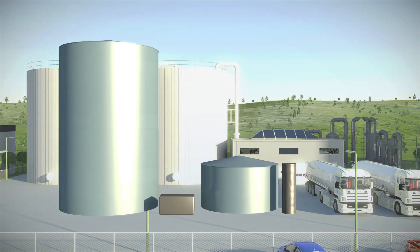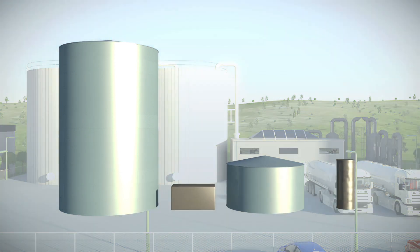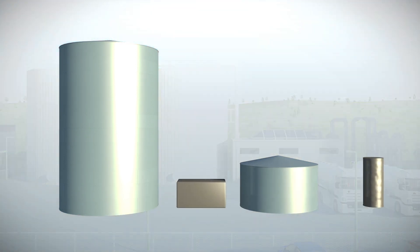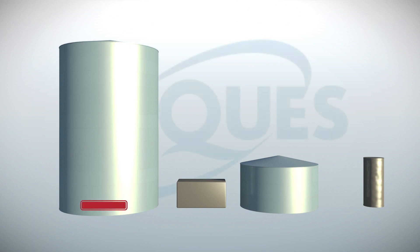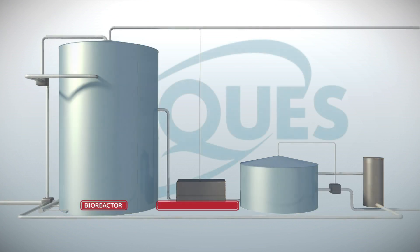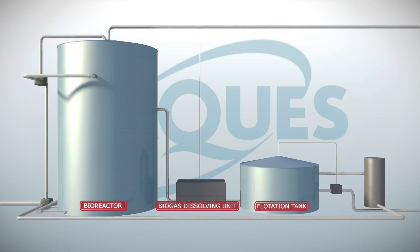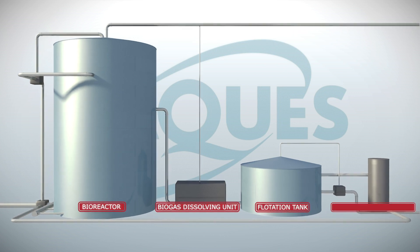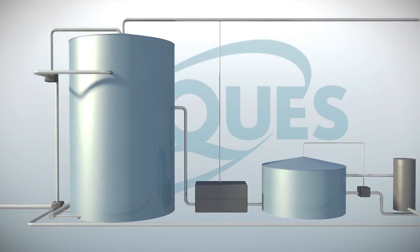The AFR system is composed of different units. The main units are the bioreactor, the biogas dissolving unit, the flotation tank and the biomass recycling tank.